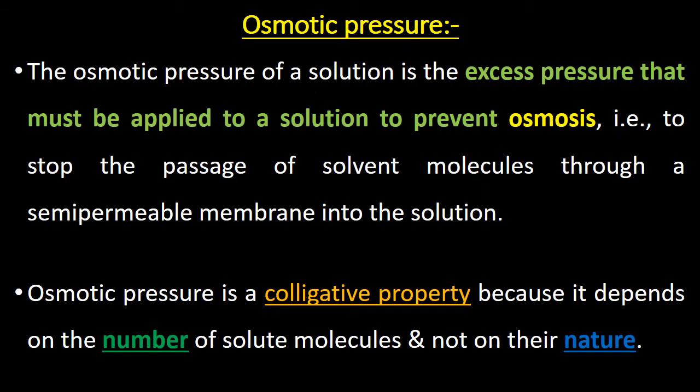Let us know what you mean by osmotic pressure. Osmotic pressure of a solution is the excess pressure that must be applied to a solution to prevent osmosis — that is, to stop the passage of solvent molecules through a semipermeable membrane into the solution. Osmotic pressure is a type of colligative property because it depends on the number of solute molecules but not on their nature.